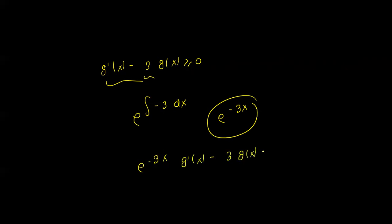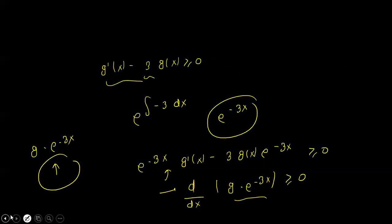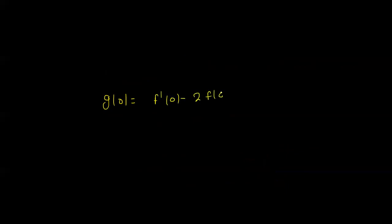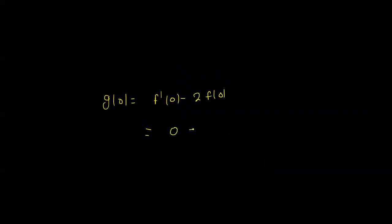After multiplying by e^(-3x), we get that the expression is greater than or equal to zero. Using the initial conditions: f'(0) minus 2 times f(0) gives us the values at zero. With f'(0) equal to 0 and f(0) equal to 1, this evaluates to 0 minus 2, which equals minus 2.